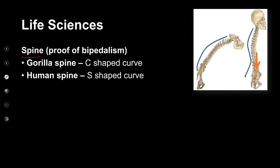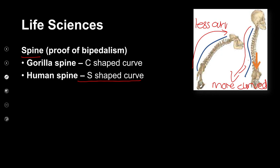Now looking specifically at the spine — that is proof of bipedalism. The spine of a human is more curved — it curves in one direction, then goes outwards, then inwards, then outwards again — so we say it is S-shaped. Whereas if we look at the ape, the spine is C-shaped, or we say it is less curved.